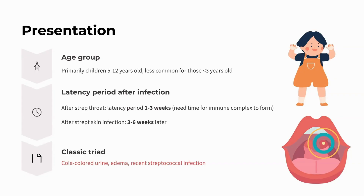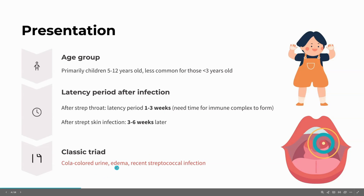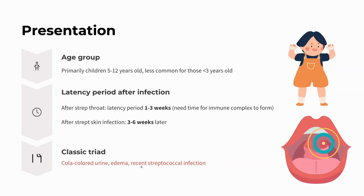After knowing the pathophysiology, how do they present? The age group is usually 5 to 12 years old; it is very uncommon in children less than 3 years old. There is a latency period after the infection, because the immune complex needs time to form. You seldom see a case with GN immediately during the streptococcal infection. Usually after strep throat, there is a latency period of 1 to 3 weeks; after streptococcal skin infection, it will be 3 to 6 weeks later before they develop GN. They then present with the classic triad: Coca-Cola-like urine, edema, and recent streptococcal infection.